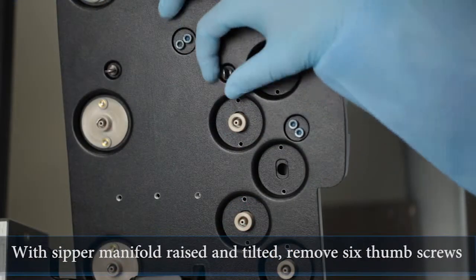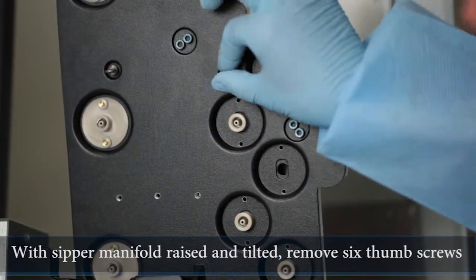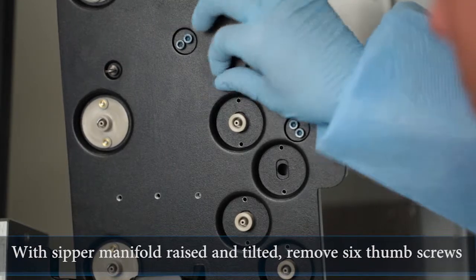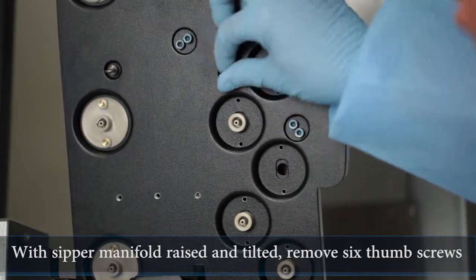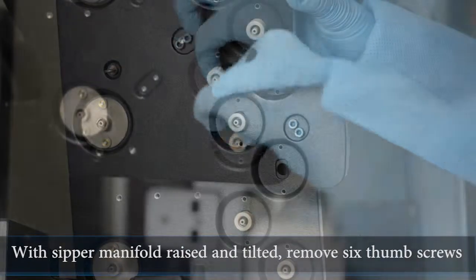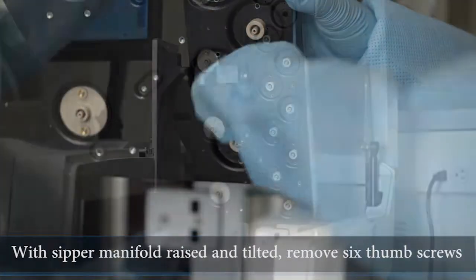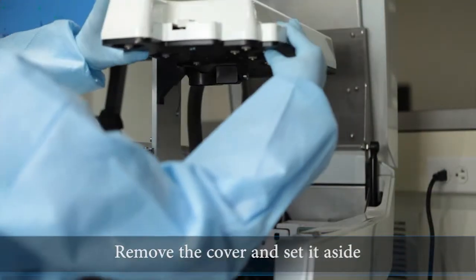With the sipper manifold still in its raised and tilted back position, remove the six thumbscrews that hold the manifold cover in place. Then remove the cover and set it aside.